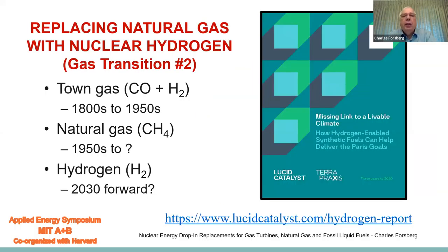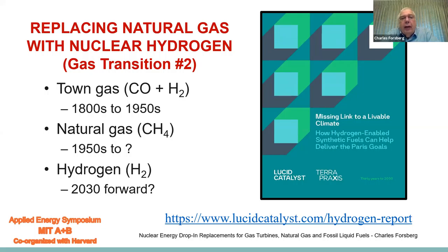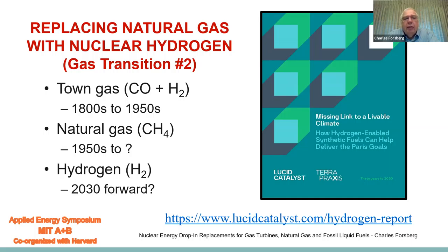Let us turn to the second subject: replacing natural gas with nuclear hydrogen, or as I would like to put it, gas transition two. Starting in the 1800s, many large cities built town gas facilities to produce town gas — a mixture of carbon monoxide and hydrogen used for heating, lights, and cooking. In the 1950s, with the introduction of natural gas, it replaced town gas in the United States, and that occurred later in Europe in the 1970s. What we're now talking about is a second gas transition from natural gas to hydrogen — something we actually know how to do.